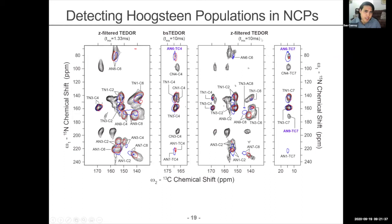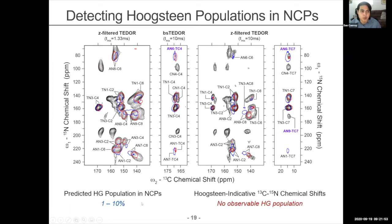In the Z-filter TEDOR and band-selected TEDOR, the analysis ultimately shows that we don't see any Hoogstein population in this particular sample. We anticipated anywhere from 1 to 10% Hoogstein population from the nucleosome core particle crystal structures, but we don't observe that in this particular sample — the Widom 601 sequence.